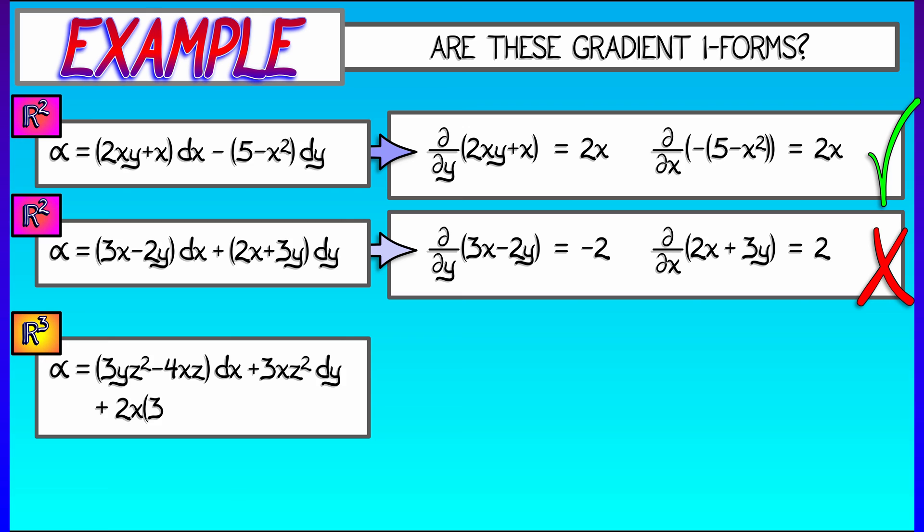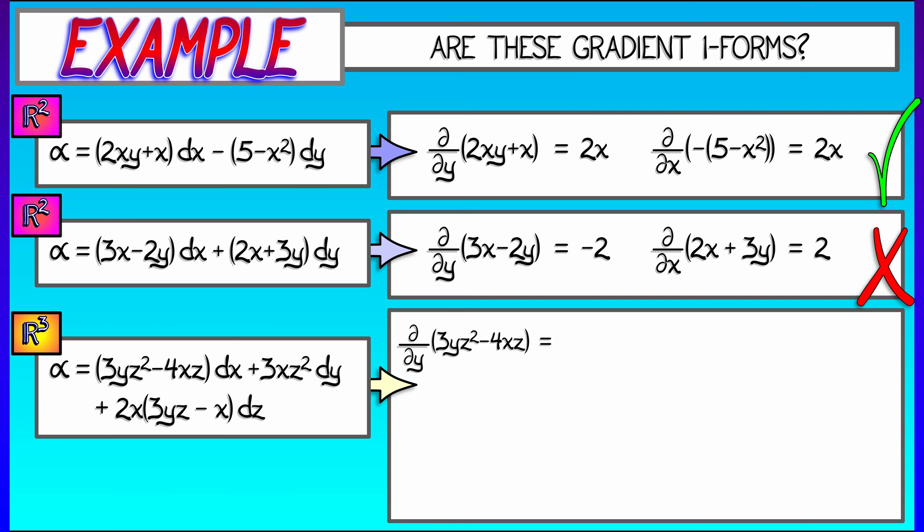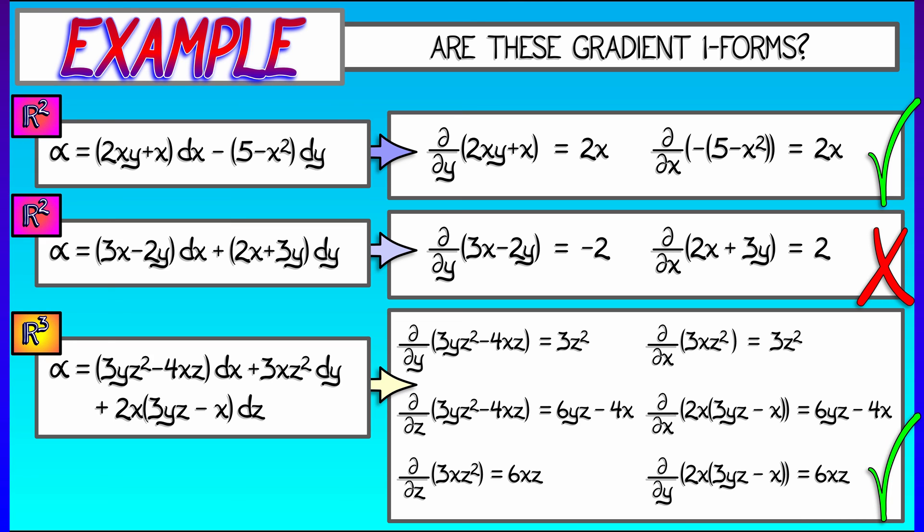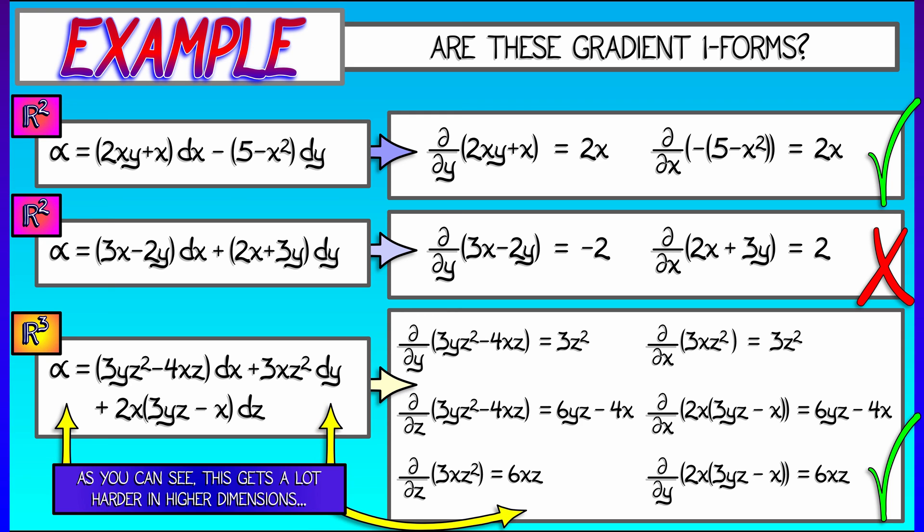Okay, here's an example on R^3 in x, y, z coordinates. I have (3yz² - 4xz)dx + 3xz²dy + 2x(3yz - x)dz. All right, roll up your sleeves because we've got some work to do. I need to take the partial of the first component with respect to the second variable, then the partial of the second component with respect to the first variable, then the partial of the first component with respect to the third variable. Oh gosh, I'm exhausted already just trying to read it out loud and I haven't even done the partial derivatives. But if you do enough work, you can show that this is indeed a gradient one form on R^3. And from this, you can see how hard this is going to be when you start getting up to higher dimensions. There's a quadratic number of derivatives you need to compute, quadratic in the dimension in which you're working.